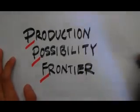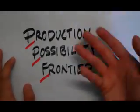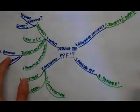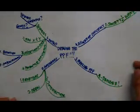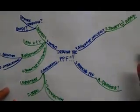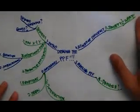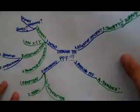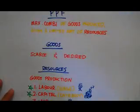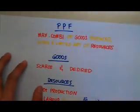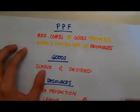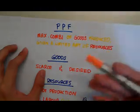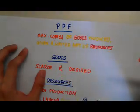Today we're going to talk about the Production Possibility Frontier, or better known as the PPF. At the end of the video, this is what you should be able to understand from this tutorial. This is just a simple mind map to show you what's included in this video for today. Now let's get straight to things. What is the PPF? The PPF is basically a maximum combination of goods produced given a limited amount of resources.